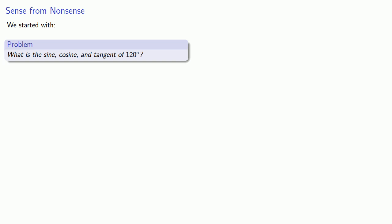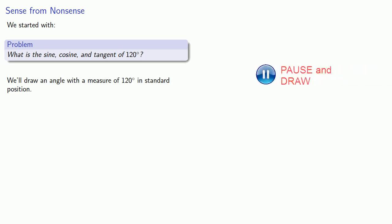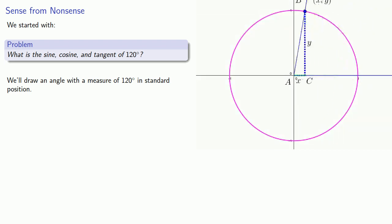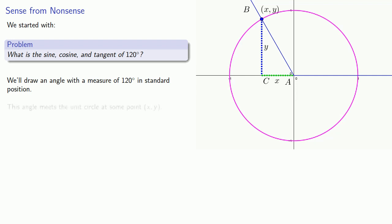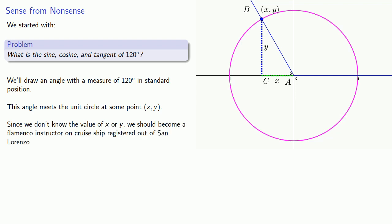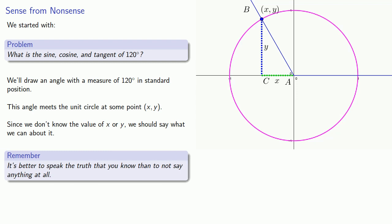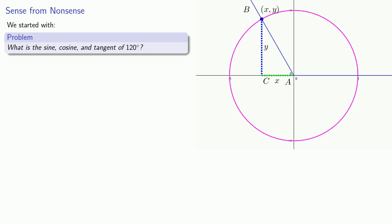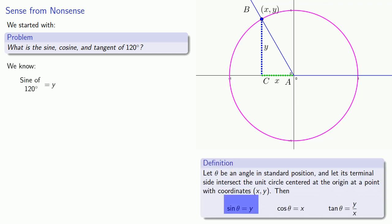So let's go back to our example question: what is the sine, cosine, and tangent of 120 degrees? We start by drawing an angle with a measure of 120 degrees in standard position. This angle meets the unit circle at some point x, y. Since we don't know the value of x or y, we should say what we can about it — remember, it's better to speak the truth that you know than to say nothing at all. If we put our angle in standard position and B is the point where the terminal side intersects the unit circle with coordinates x, y, then the sine is y, the cosine is x, and the tangent is y over x.